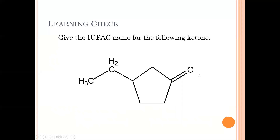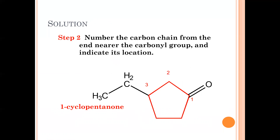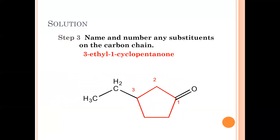Here's an example with a cyclic structure — cyclopentane. We drop the E and add ONE to get cyclopentanone. For cyclic compounds, the carbonyl carbon is always carbon one. Numbering around the ring: one, two, three — if there's an ethyl group at carbon three, this becomes 3-ethyl-1-cyclopentanone. So we use the longest chain (cyclopentane), drop E, add ONE, put the carbonyl at C1, and add substituents.